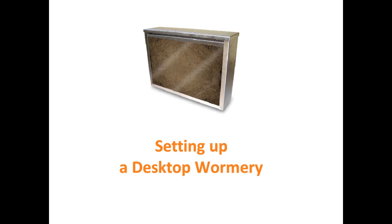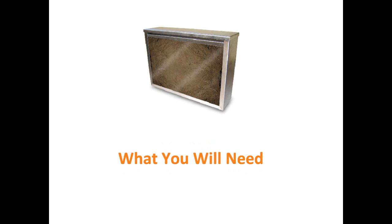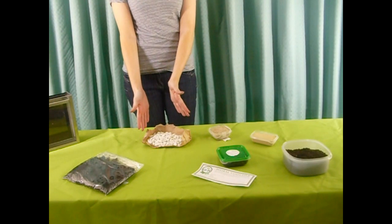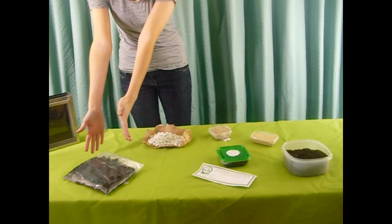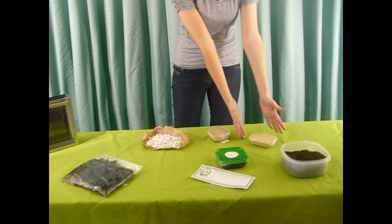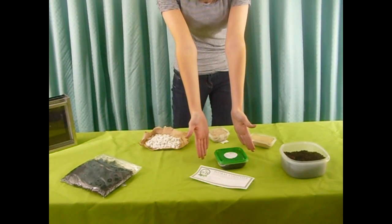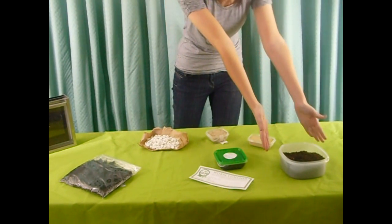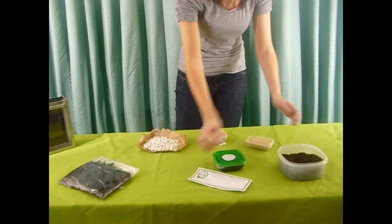Welcome to our video on how to set up your own desktop wormery. When you receive your wormery, you'll get some drainage chips, bedding, some feed for your worms, some sand, and also your voucher which you will need to post in order to get your worms. You'll also need some extra compost.